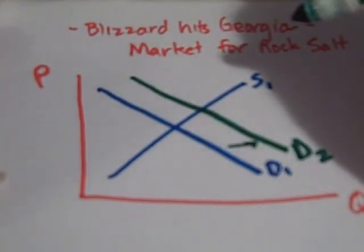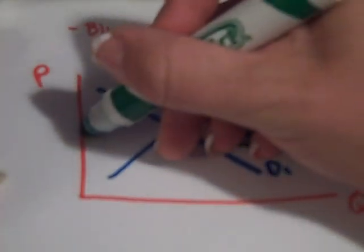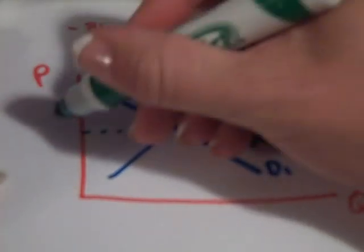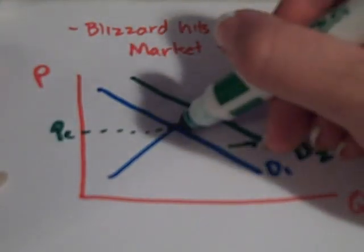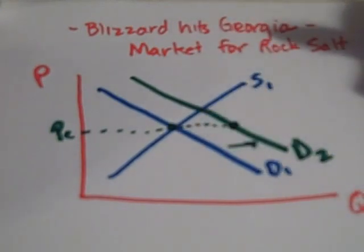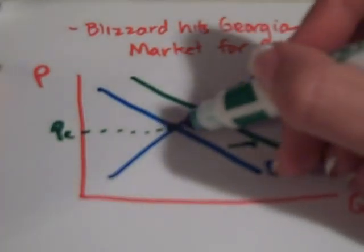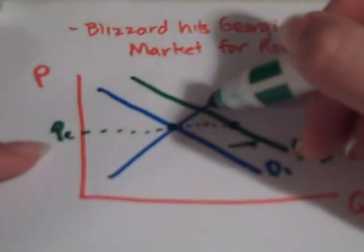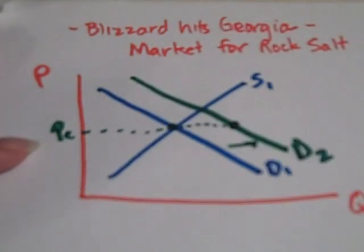So what we're going to look at here is at this price, which was our equilibrium price before. At that price, if it stays at that price, what is that going to cause? Why does our market actually move to this new price? There are some times that this might take a little bit of time — prices in many markets are naturally what we call sticky or inflexible.